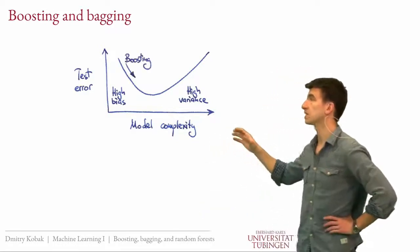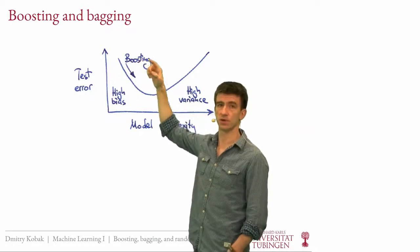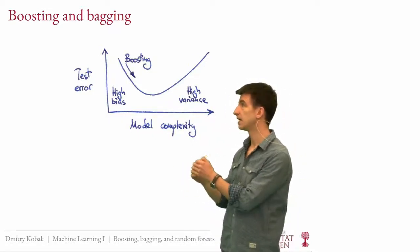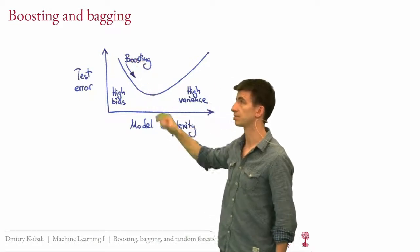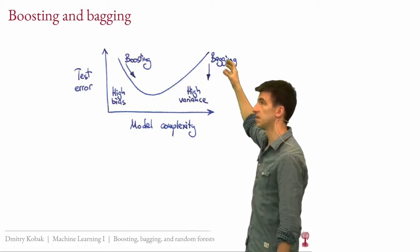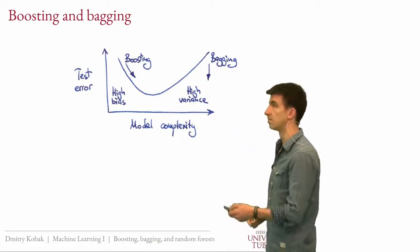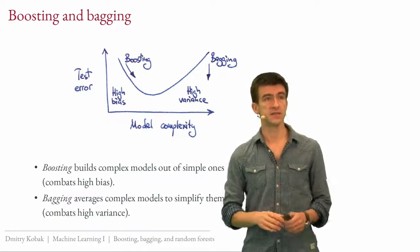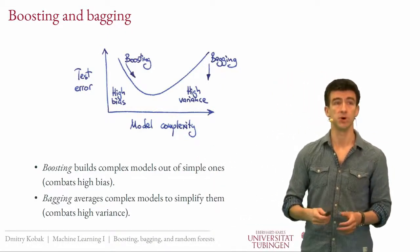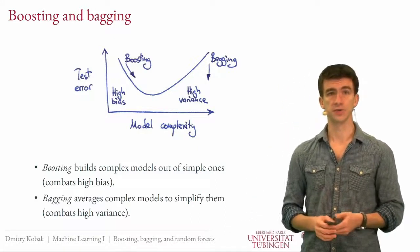Boosting and bagging can be illustrated on this plot as follows. Boosting usually starts with a very simple model — one that underfits the data and has high bias — and then applies the boosting procedure, increasing model complexity and bringing the error down. Bagging, in contrast, starts with a very complex model that overfits the data badly, then bags several models together to reduce the variance and improve performance. So boosting builds complex models out of simple ones, while bagging averages complex models hoping to average out the variance.